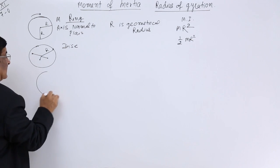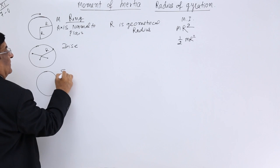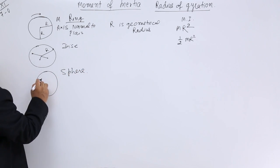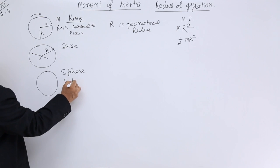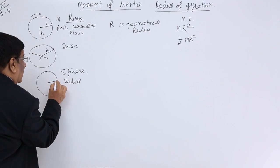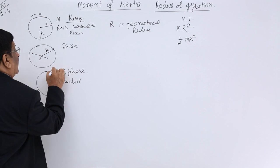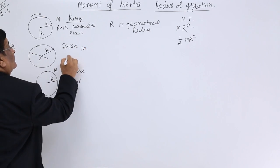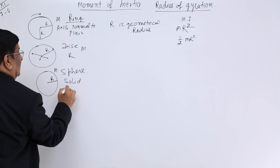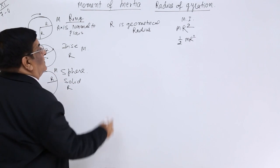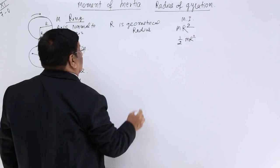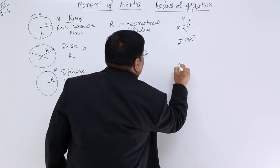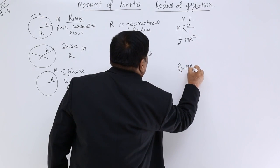Now in case we have a solid sphere, it has radius r and mass m again — that is the geometrical radius r. And we have moment of inertia, which is 2/5 mr².